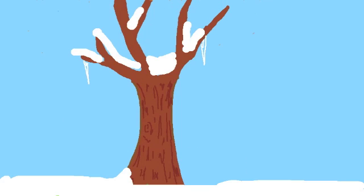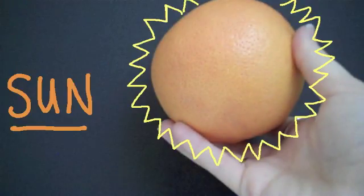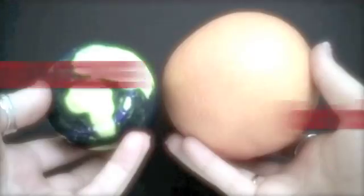To explain why the earth has seasons, I will be using this grapefruit to symbolize the sun, and this tennis ball to symbolize the earth.